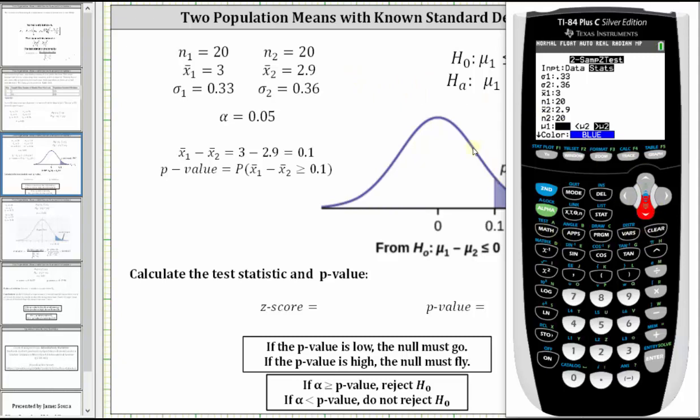We're testing to see whether μ₁ is greater than μ₂, and therefore we select the third option, greater than μ₂, which is already highlighted. If it wasn't, we would arrow over and press enter. Down to calculate and press enter.